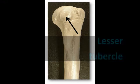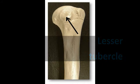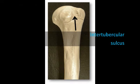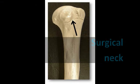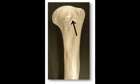The lesser tubercle is the anterior projection just inferior to the anatomical neck. The intertubercular sulcus is the groove found between the greater and lesser tubercles. Just distal to the tubercles is the surgical neck, a narrow area of the humerus where the head tapers to the shaft — so named because this is the common site of fractures to the humerus.